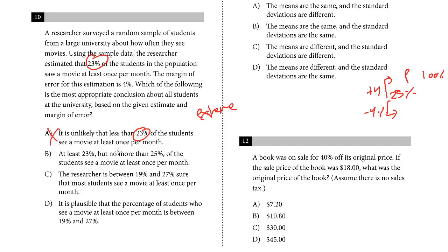At least 23%, but no more than 25% of the students see a movie at least once per month. This is similar to A, it's wrong. It's not at least 23 because the margin of error is 4, it could be 19. And it's greater than 25, it's up to 27 with the margin of error. The researcher is between 19 and 27% sure that most students see a movie at least once per month. So here we have the percentages we're looking for, but these aren't applied correctly. This has nothing to do with a confidence amount. This is just based on the number of students with the margin of error.